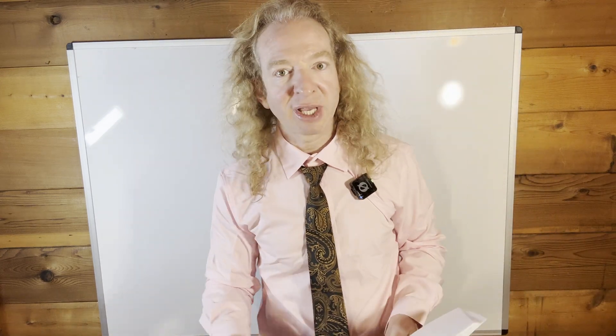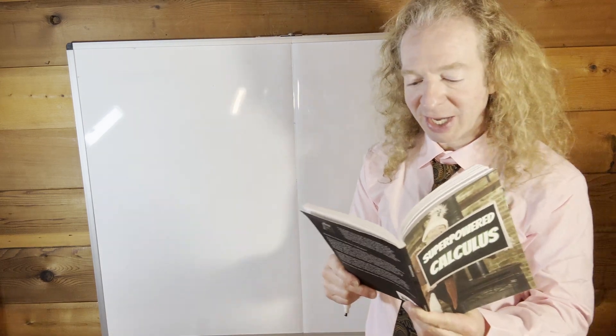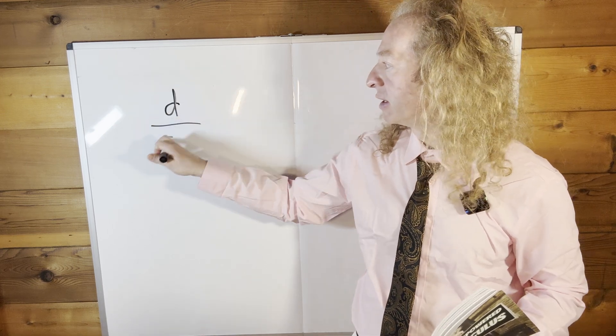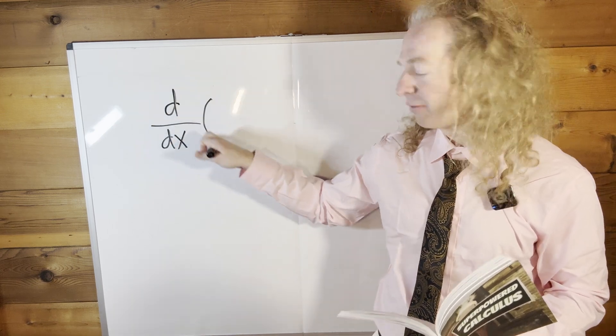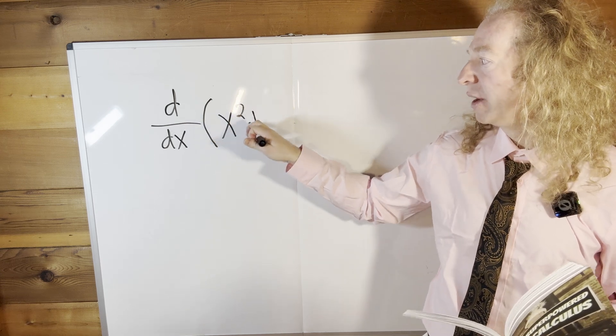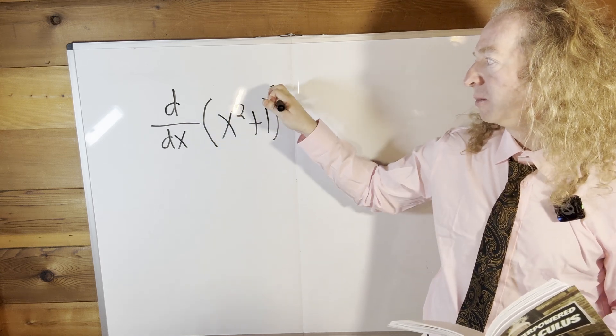In this video we're going to do a simple example of the chain rule. The exercise is the following: we have d/dx of x squared plus 1, and the whole thing is cubed.